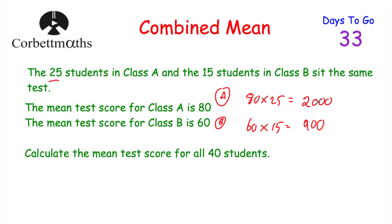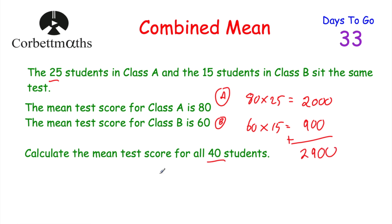So we know that if we add up all the test scores in class A, the grand total is 2,000 marks. If we add up all the test scores in class B, there's a total of 900 marks. We've been asked to work out the mean test score for all 40 students. So we add up these totals to get the grand total for all 40 students, which is 2,900. Then we divide by 40. So 2,900 divided by 40 equals 72.5. The mean test score for all 40 students was 72.5.